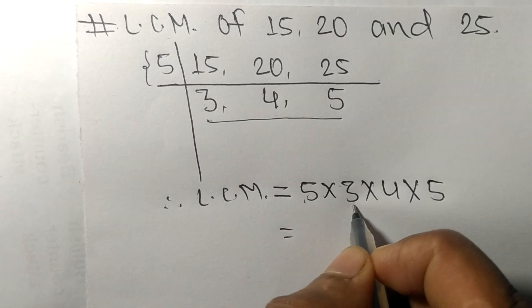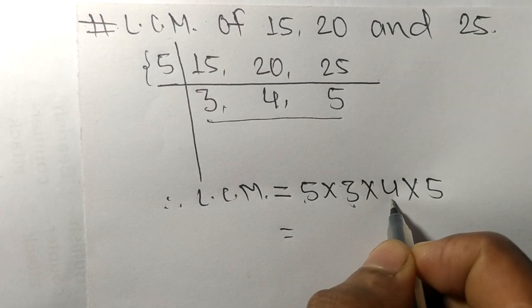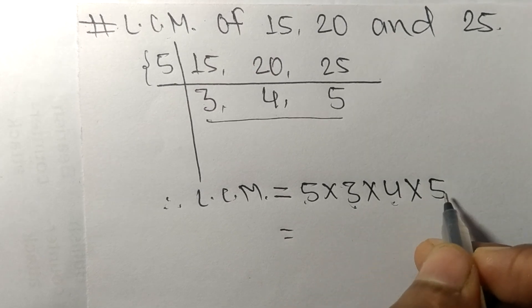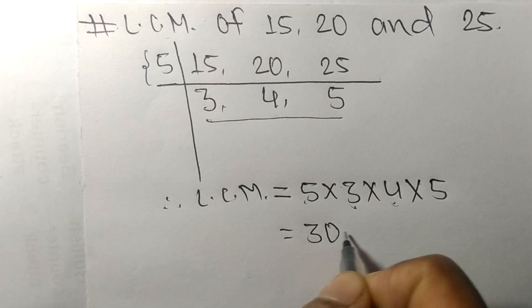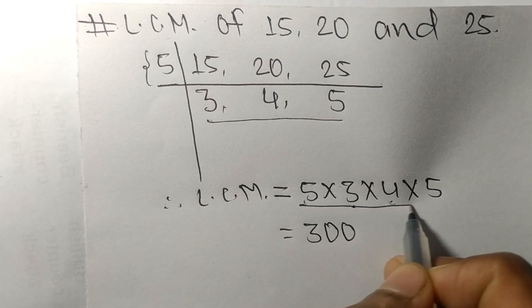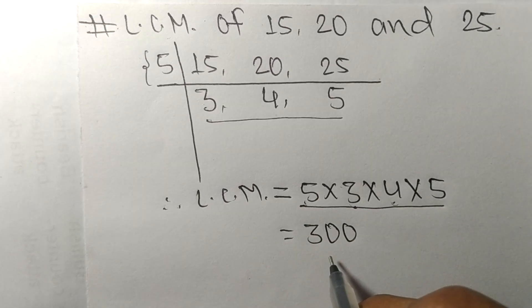5 times 3 mean 15, 15 times 4 mean 60, 60 times 5 mean it is 300. So by multiplying all these numbers we got 300.